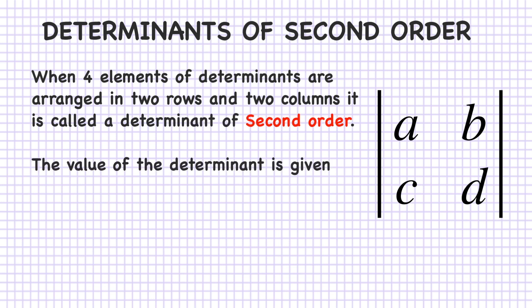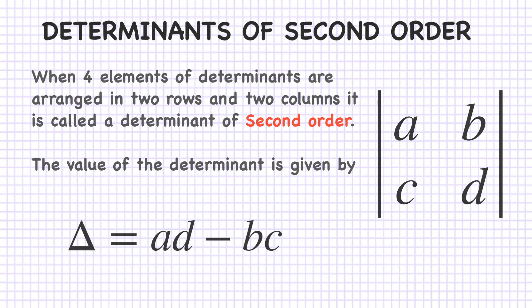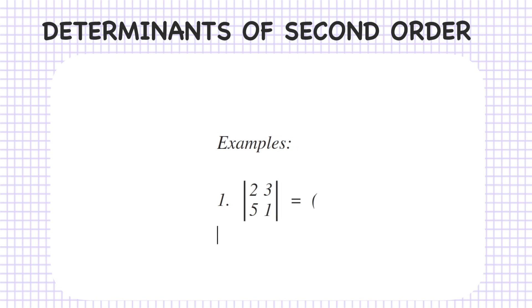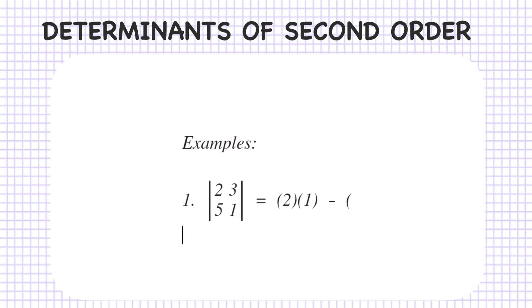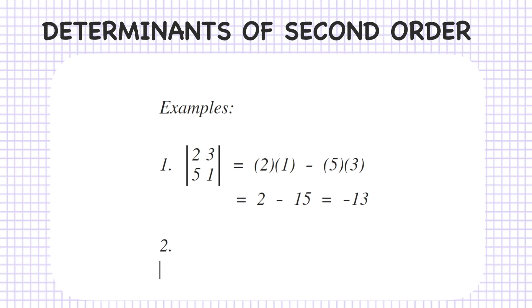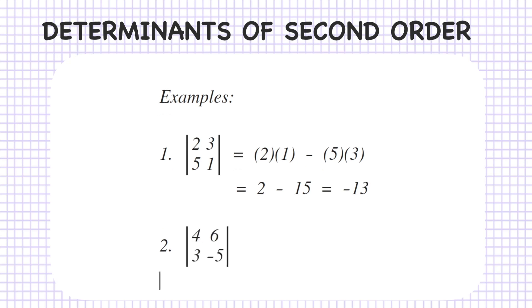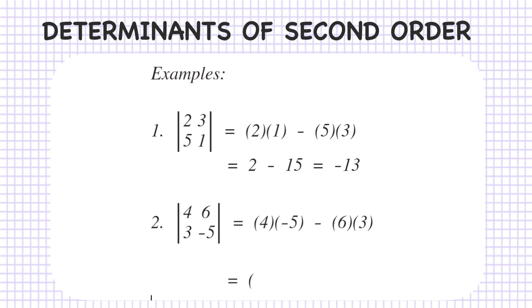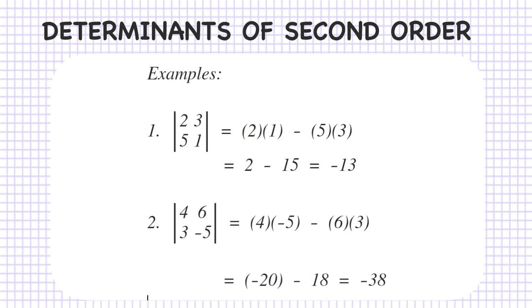The value of a second-order determinant is given by delta, which equals A into D minus B into C. For example, if the determinant has elements 2, 3, 5, 1, then it equals 2 into 1 minus 5 into 3, which is 2 minus 15, giving minus 13. Another example is 4, 6, 3, minus 5, which equals 4 into minus 5 minus 6 into 3, that is minus 20 minus 18, equals minus 38.